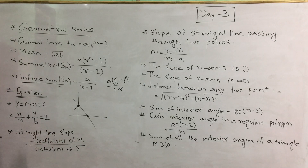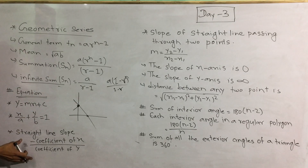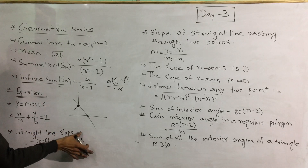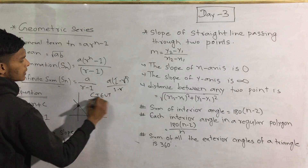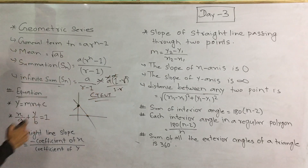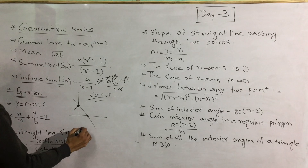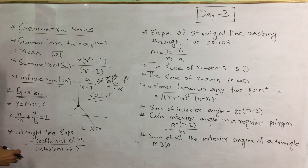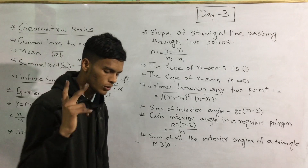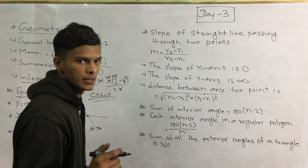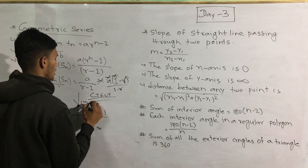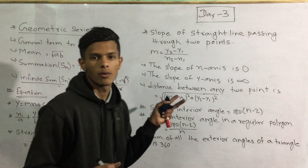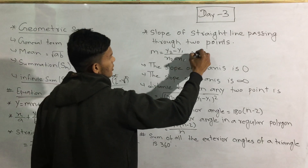This is the state line, and the slope of the state line. This is the coefficient of x divided by the coefficient of y. These are the two points of the equation: x1, y1, x2, y2.